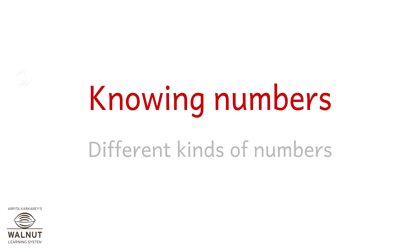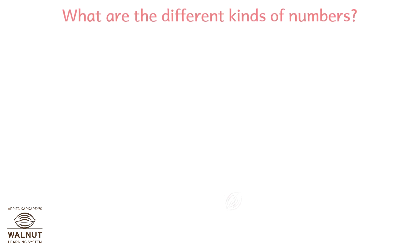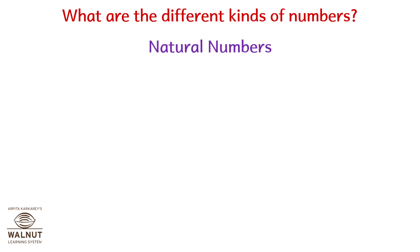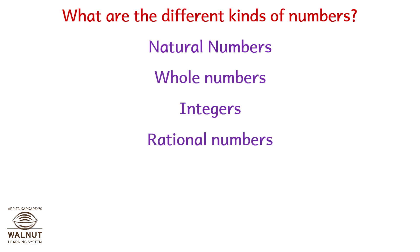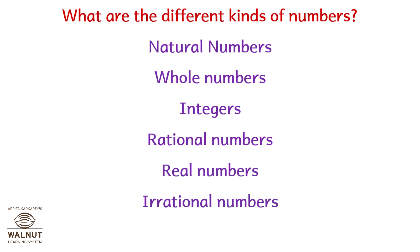Knowing Numbers. What are the different kinds of numbers? Natural Numbers, Whole Numbers, Integers, Rational Numbers, Real Numbers, and Irrational Numbers.